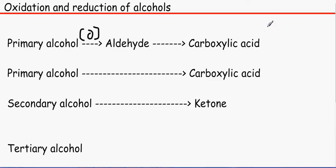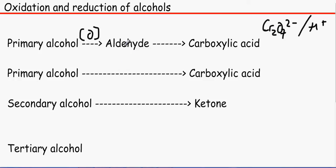A suitable oxidising reagent is Cr2O7²⁻ with H⁺. The H⁺ is taken from sulfuric acid and the Cr2O7 is taken from potassium dichromate. That would oxidise to make an aldehyde, and it also further oxidises if we don't use a distillation apparatus — we would further oxidise it to make a carboxylic acid.